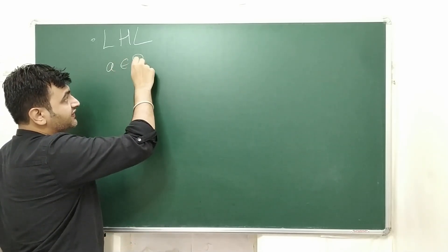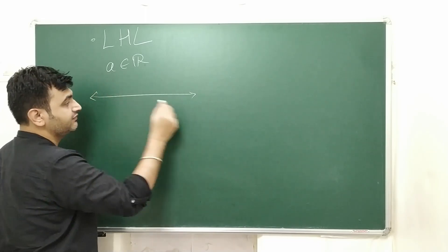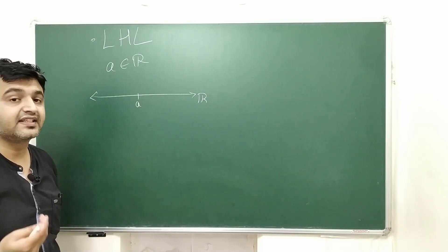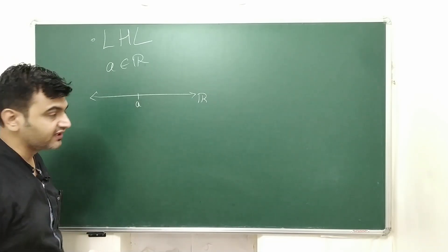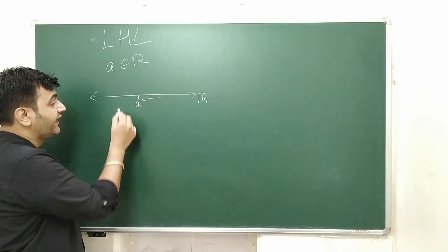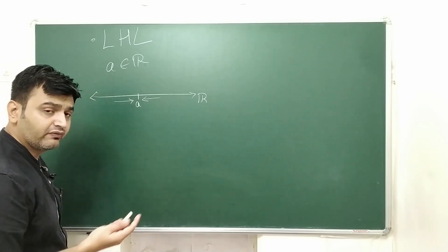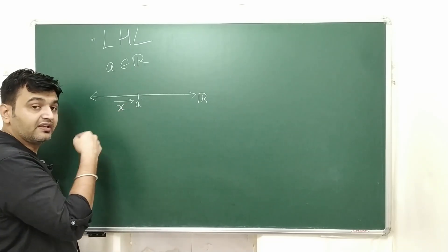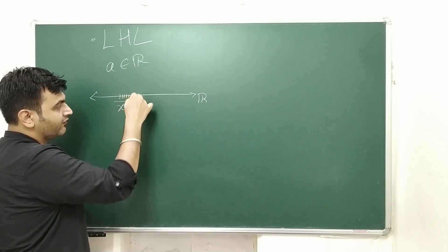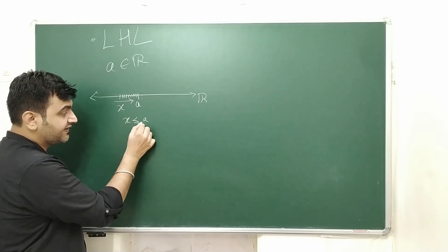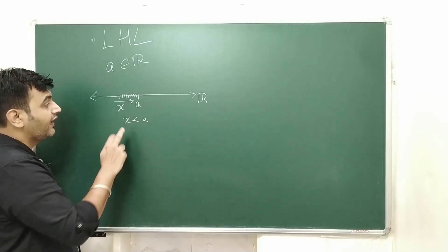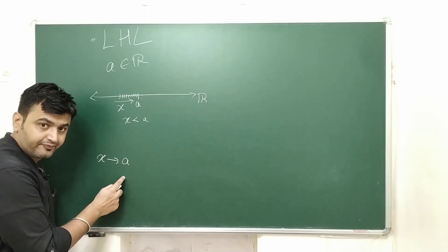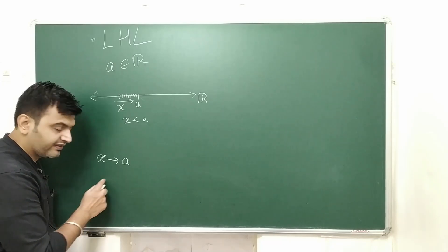So let's see the concept of LHL — the left hand limit. We have a, which is a fixed real number. On the real number system, there is a, and when I want to approach towards a, there are two ways: from the right hand side or from the left hand side. Let's first approach a from the left hand side, so my X is on the left of a, meaning X is less than a, and it is approaching towards a.